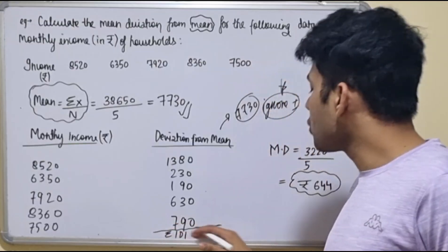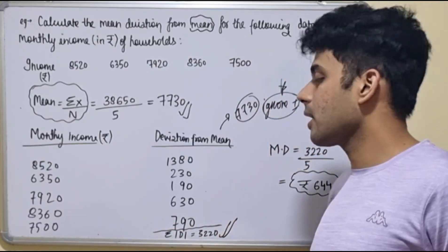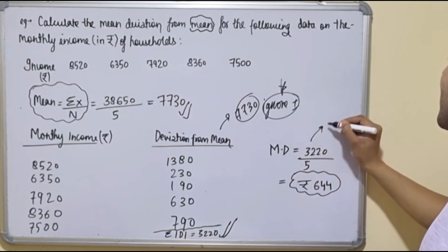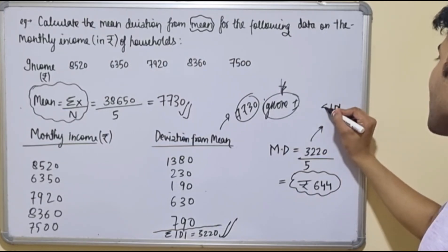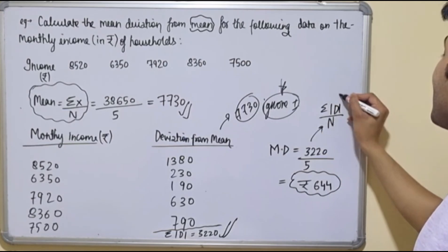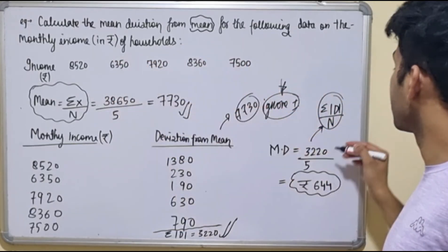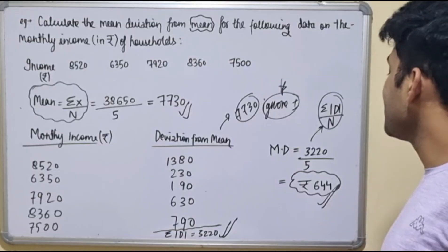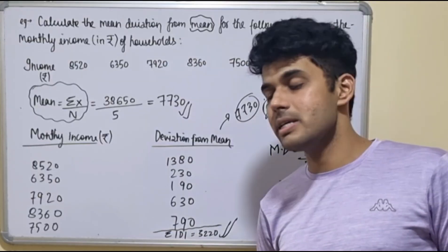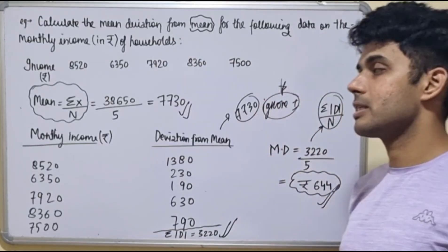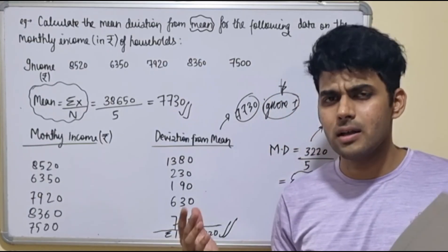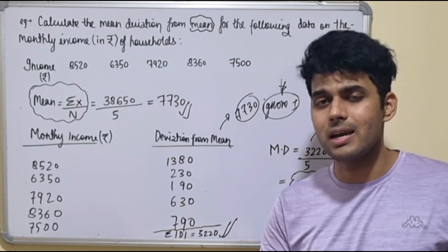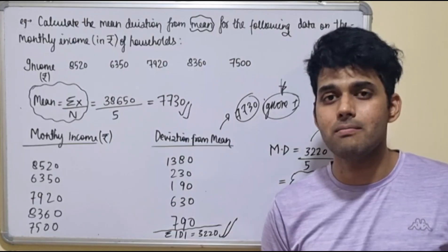Once all deviations are found, add them up to get the sum. The sum of all deviations is 3220. Applying the mean deviation formula — sum of |D| upon n — that is 3220 divided by 5, you get a mean deviation of 644 for this question. That is how you find mean deviation using central tendency: mean, median, or mode.